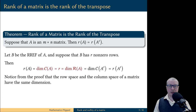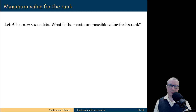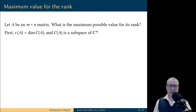But what this proof reveals is the following interesting observation: the dimension of the column space of the matrix is always equal to the dimension of its row space. Finally, let's come up with an estimate of the maximum possible value of the rank of a matrix. Let's say we have a matrix A of size m by n.